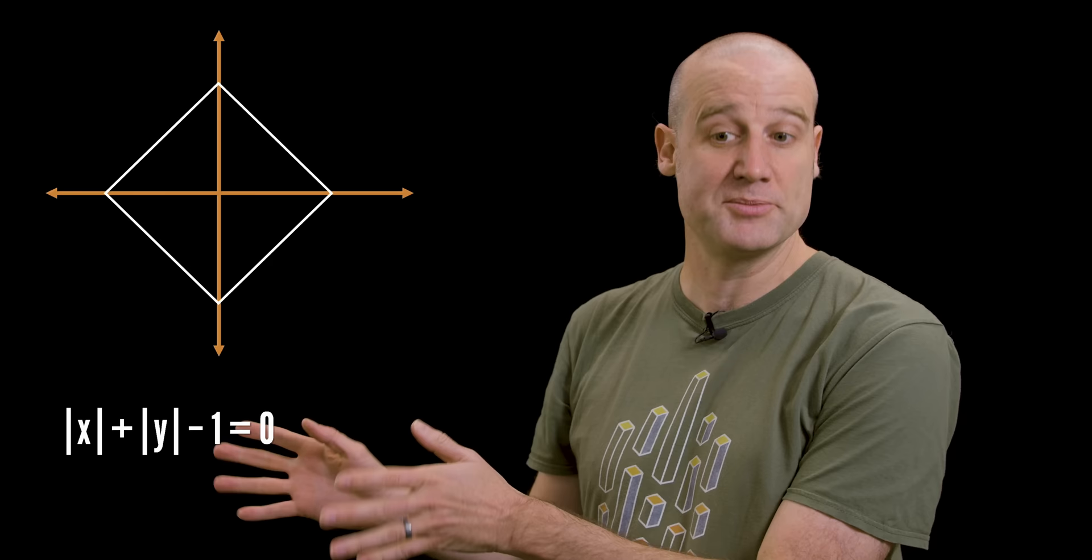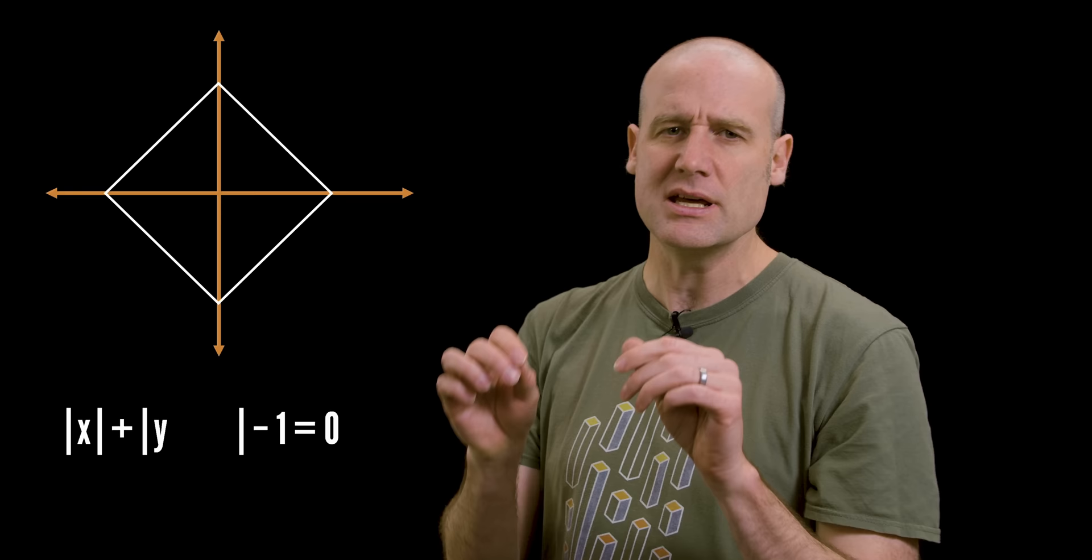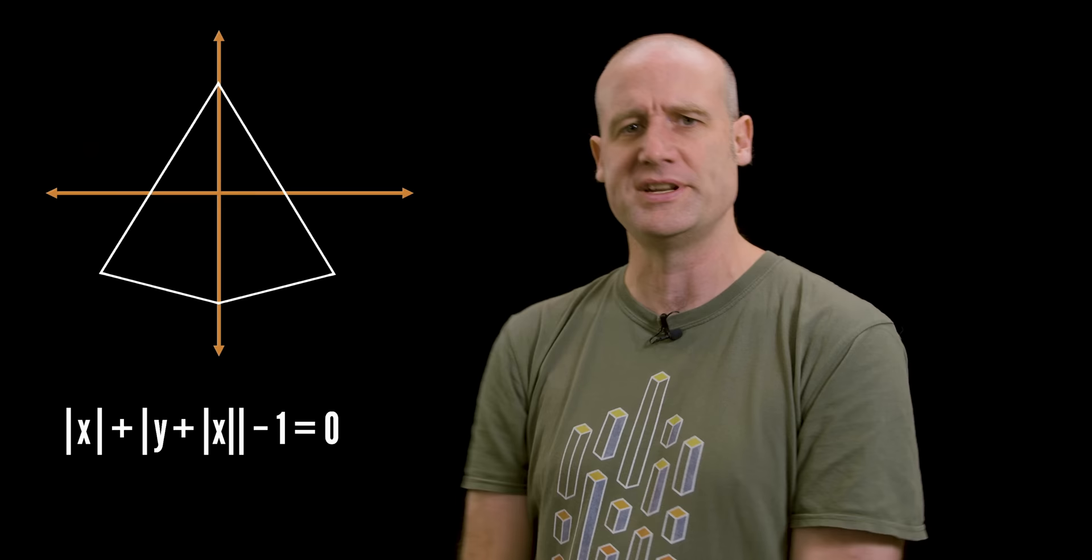This video made possible by Jane Street. More about the Jane Street triangle later. A reminder that shapes can have equations. So here we have a square and its equation underneath, which is using the absolute value function on x and y. And it gives you this fantastic square. We can turn something like that into a triangle by adding in just a touch of extra x. That one absolute value of x extra kind of folds it all down and we end up with a triangle.